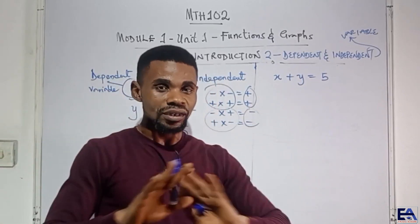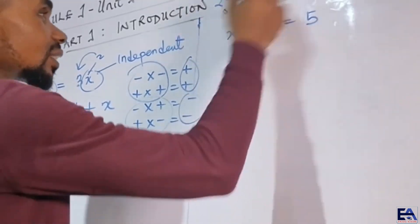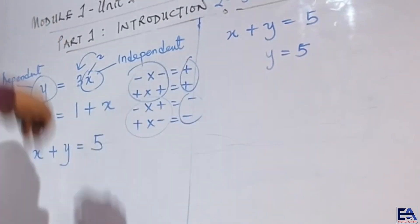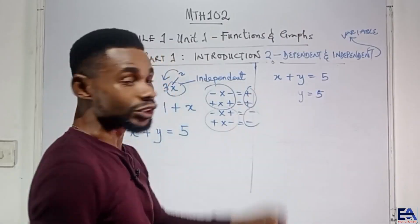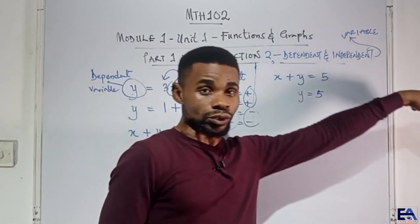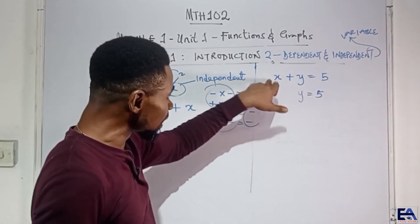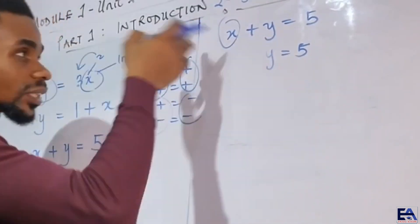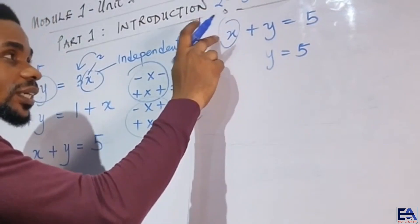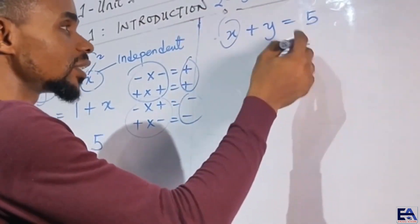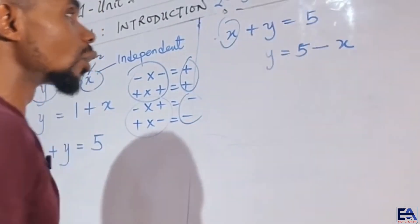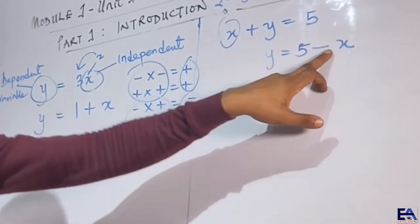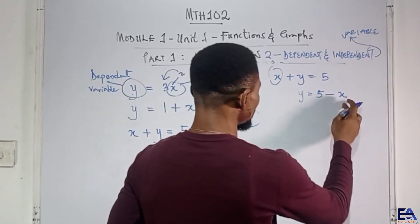You can memorize it that way. Here, we send x to the other side — in mathematics, whenever a value crosses the equality sign, its sign changes. If it was positive, it becomes negative; if it was negative, it becomes positive. Since x was positive, it goes to the other side as minus x, giving us y equals 5 minus x. If x equals 3, then y equals 5 minus 3, which is 2. The ordered pair shows that when x is 3, y is 2.